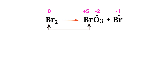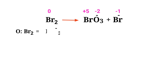In this equation, Bromine has a charge of 0 and it is changing into plus 5, so Bromine is being oxidized. In this other equation, Bromine has a charge of 0 and it is changing into minus 1, so Bromine is being reduced.